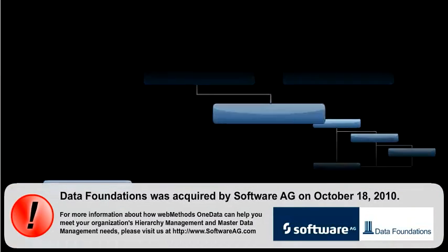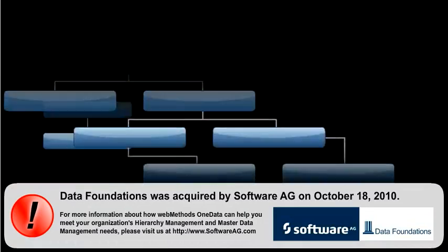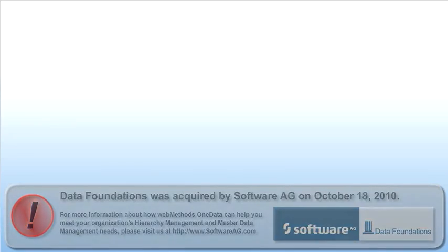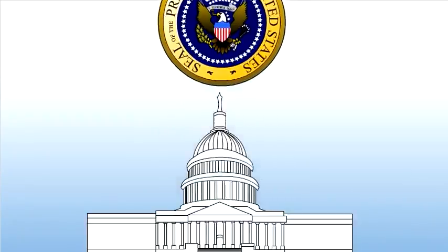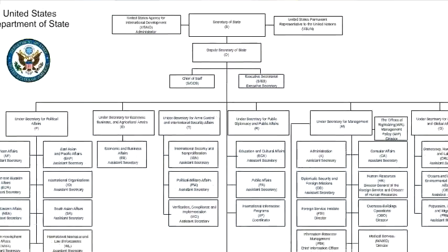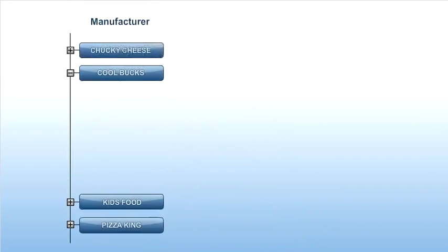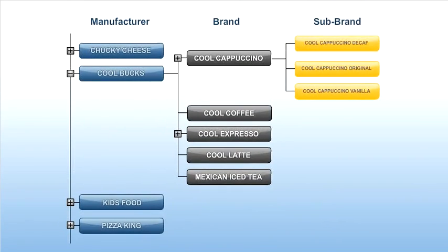Hierarchies represent relationships among data items. Some relationships or hierarchies are straightforward in concept — for example, the office of the U.S. President, the cabinet followed by undersecretaries and assistants, a financial chart of accounts, or a branding structure for a consumer goods company.